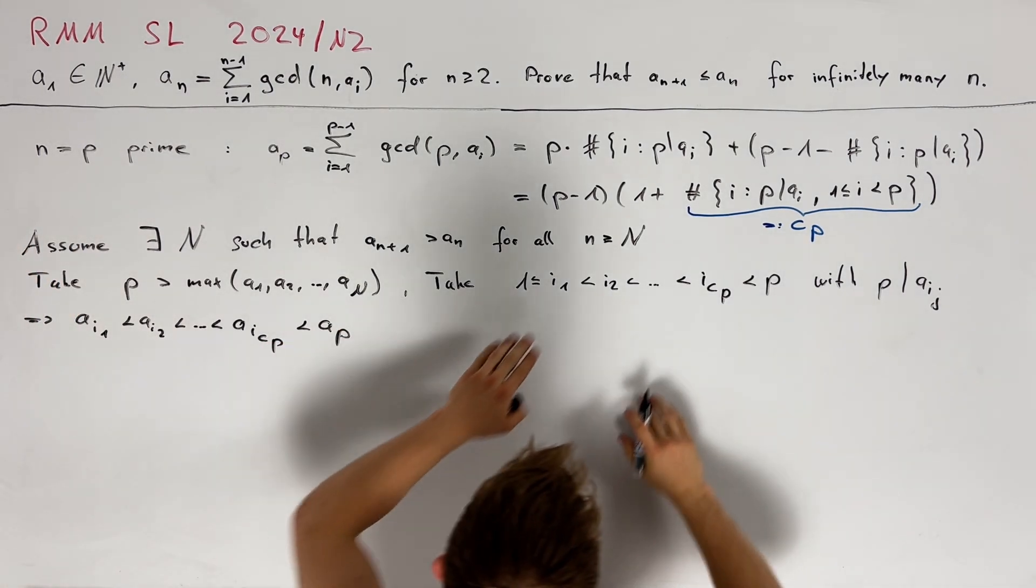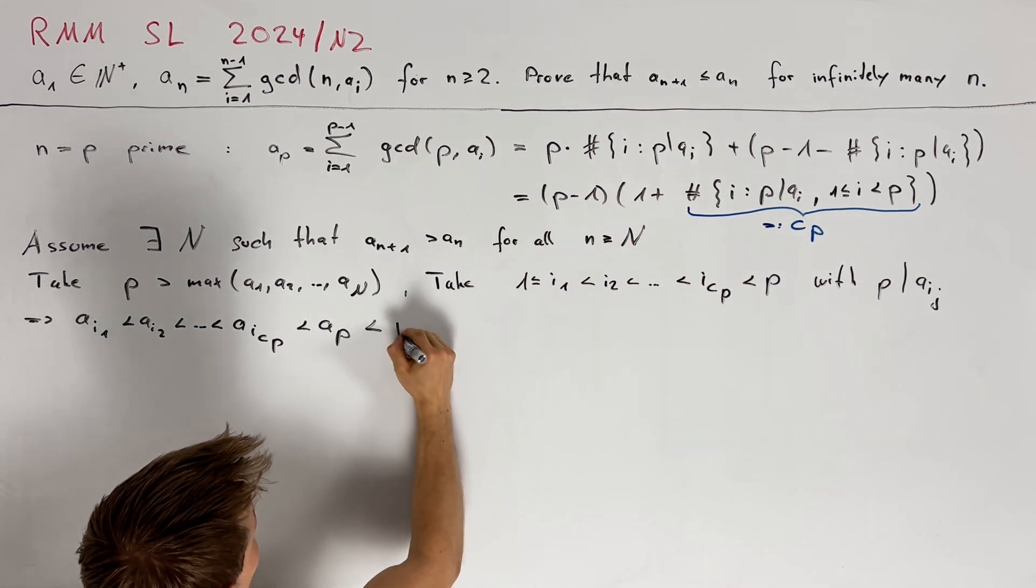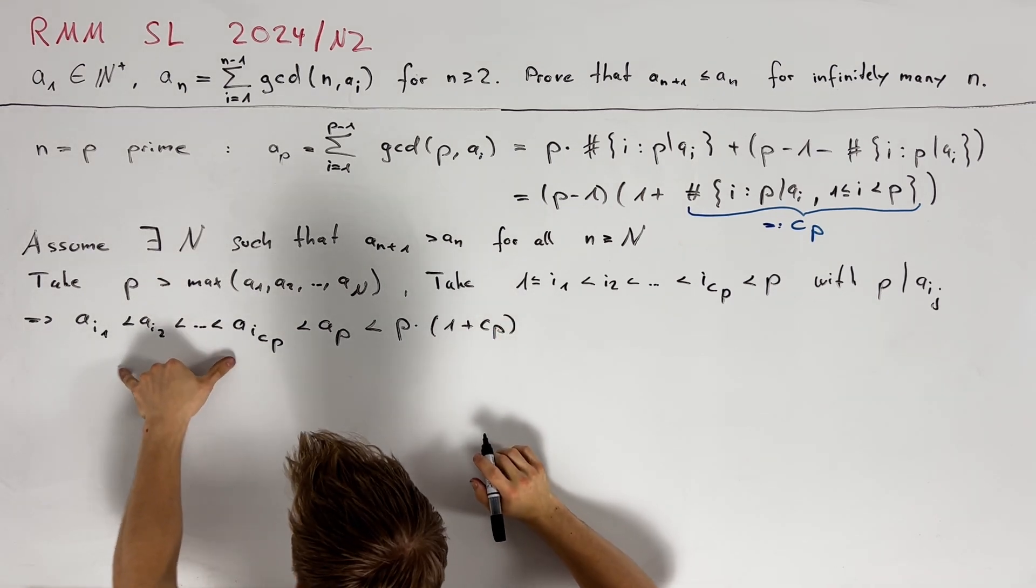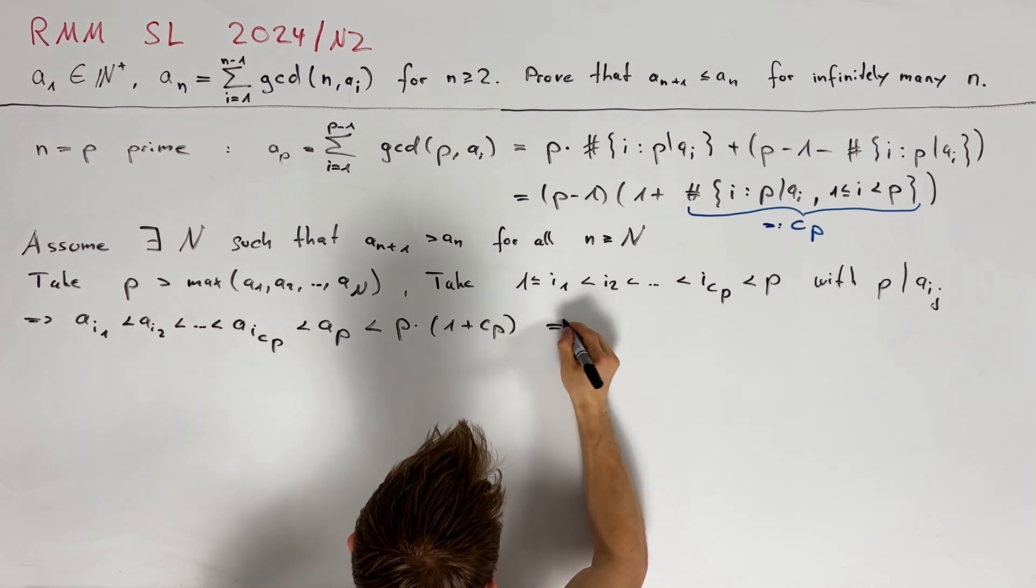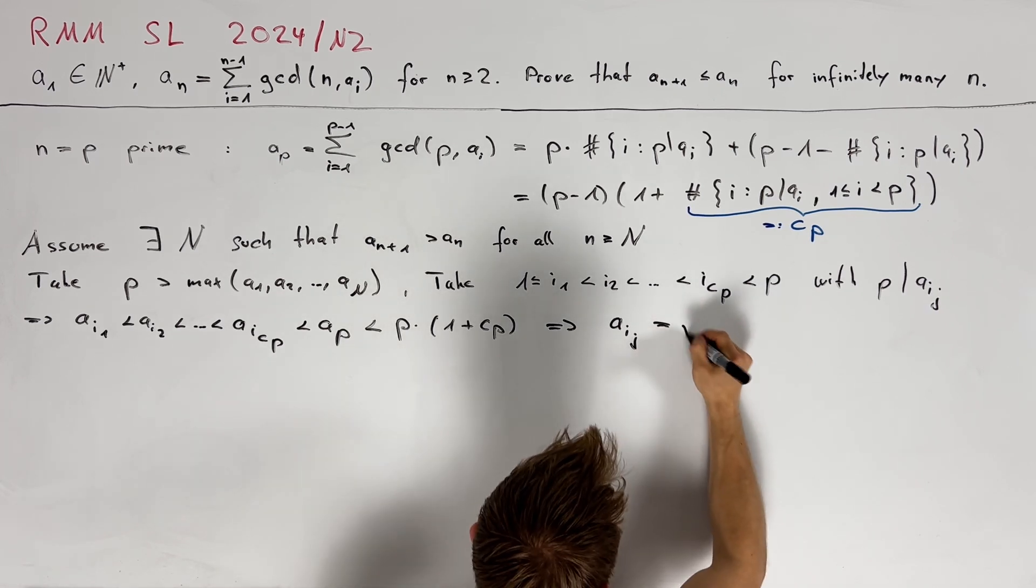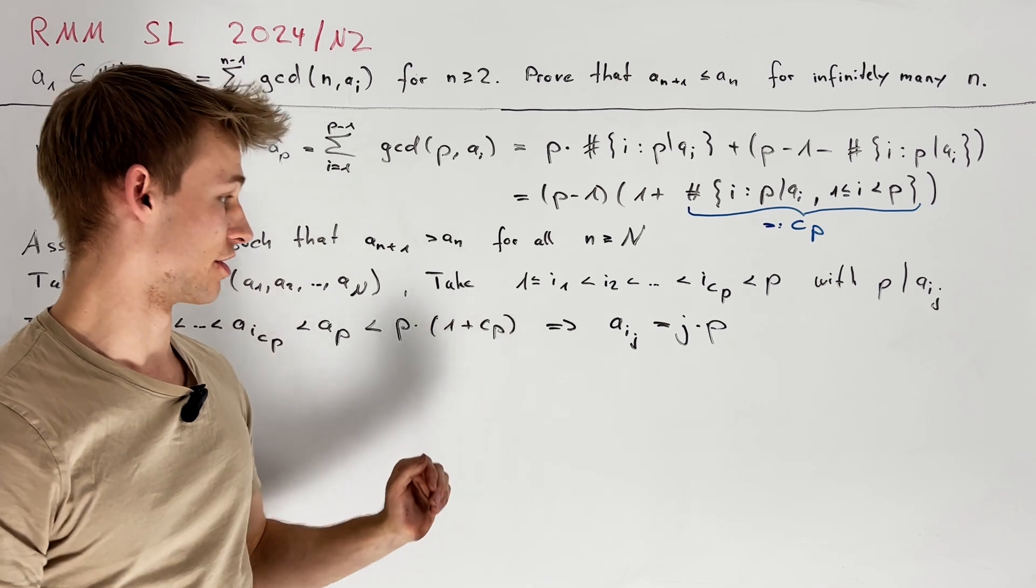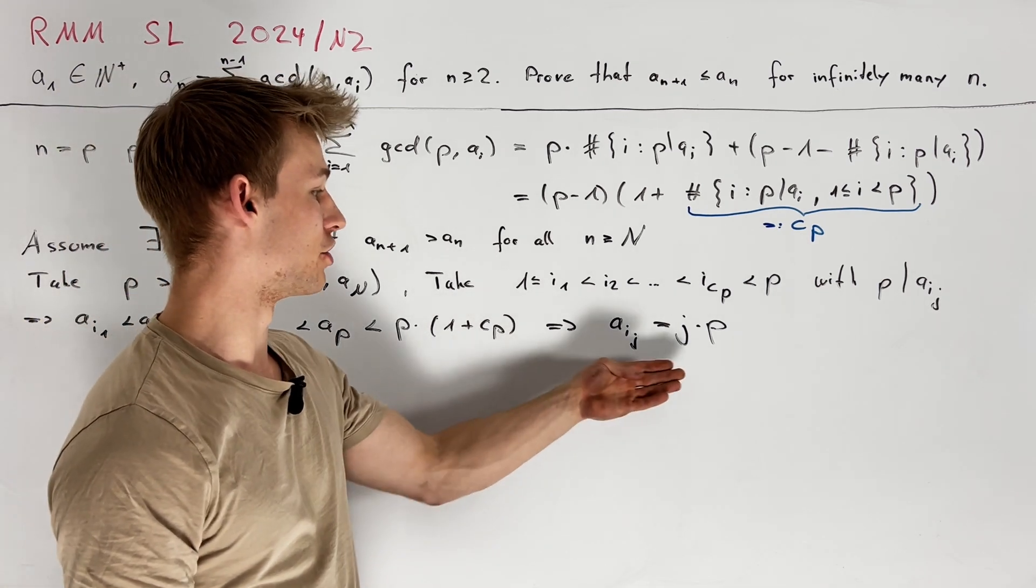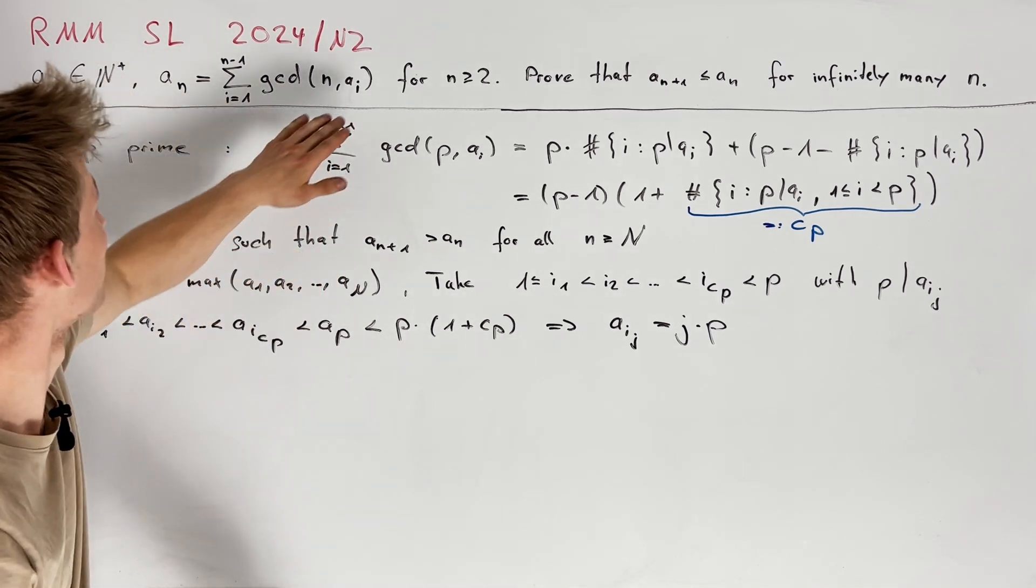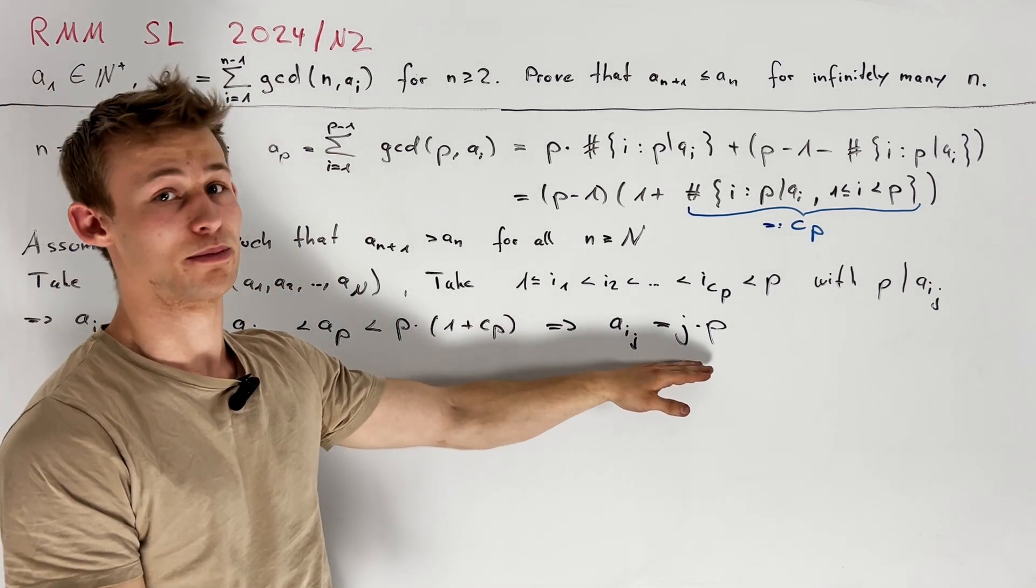We already calculated the value of a_p and we especially see that this is less than p times (1 plus c_p). Since all of these values here are divisible by p this immediately implies that a_{i_j} is equal to j times p. Unfortunately this is not quite a contradiction but it's actually a pretty sharp result and now our next step is to maybe try to figure out some more things about the sequence to see if this is actually possible.